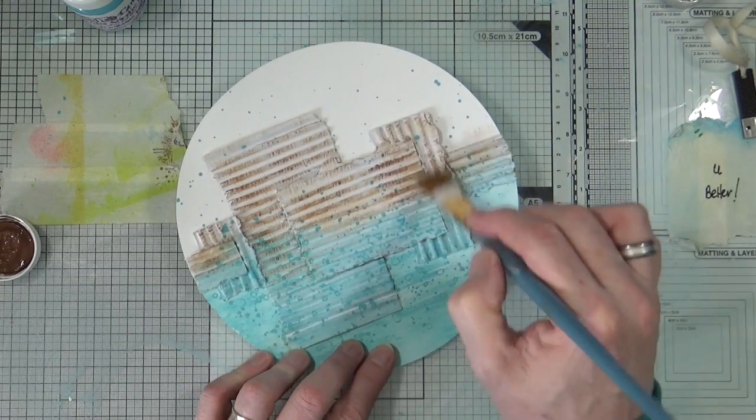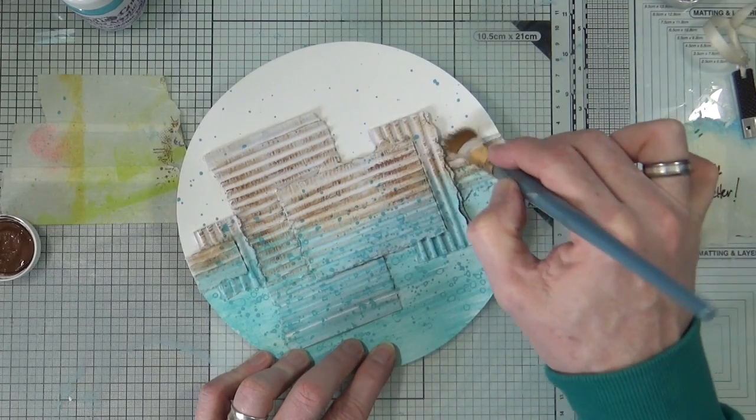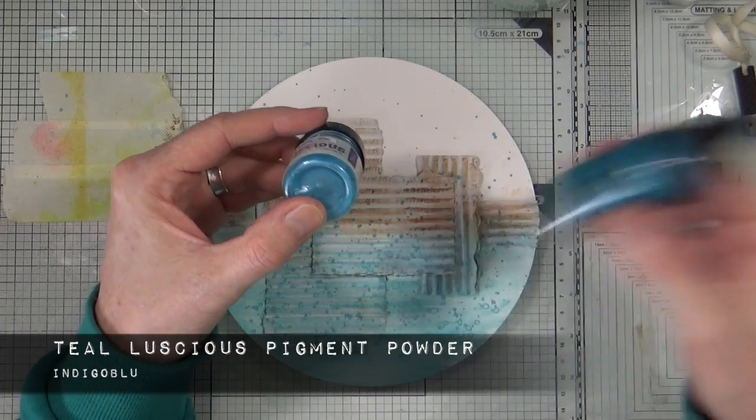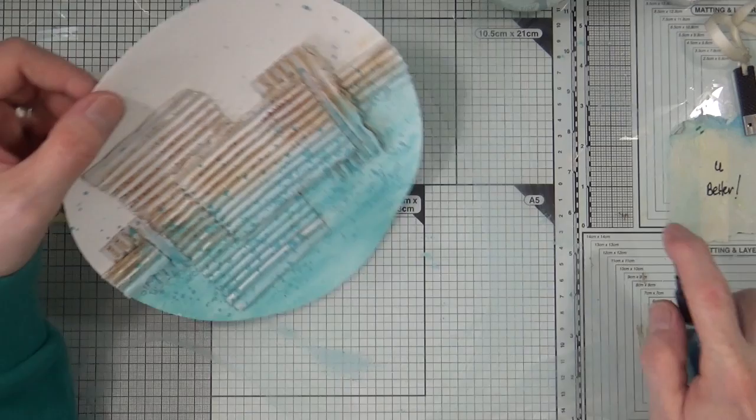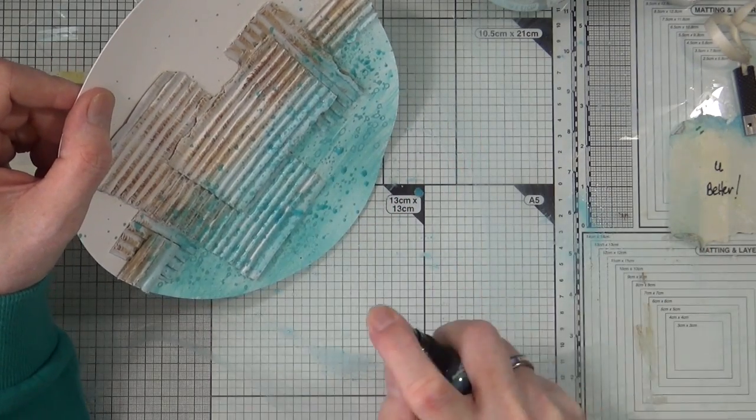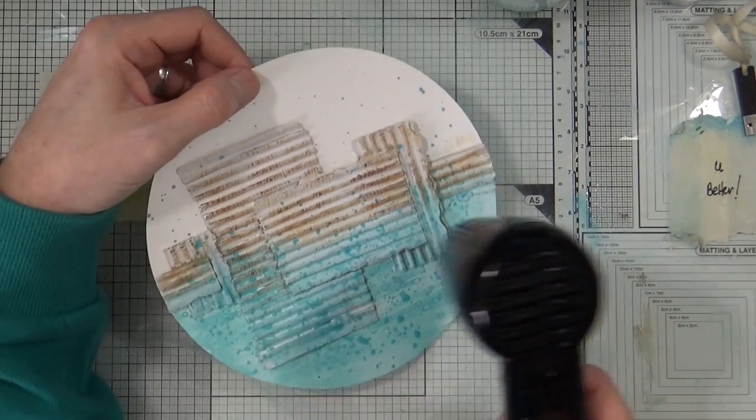While I'm adding the hot cocoa, I decide that I want some darker splatters and darker areas in that blue bottom half of the page. So I'm bringing out my Teal Luscious pigment powders from Indigo Blu. I've already pre-mixed a little bit of it with some water into a spritz bottle and I'm just going to spritz some splatters of that pigment powder. It's a mica pigment powder so it will have a nice glistening shine to it.